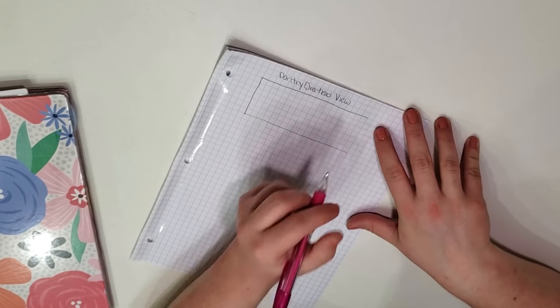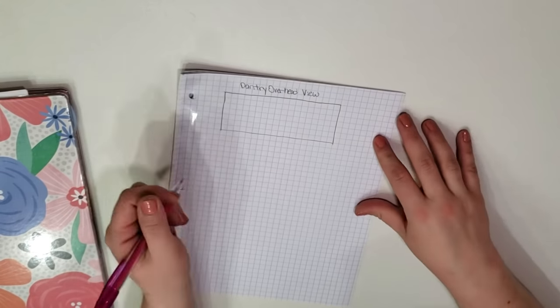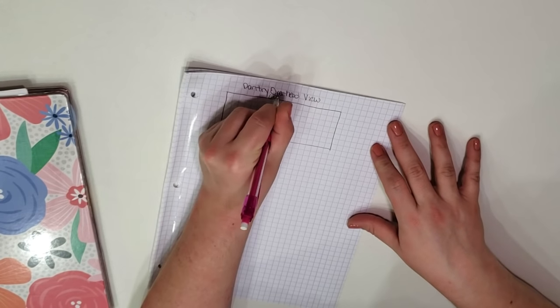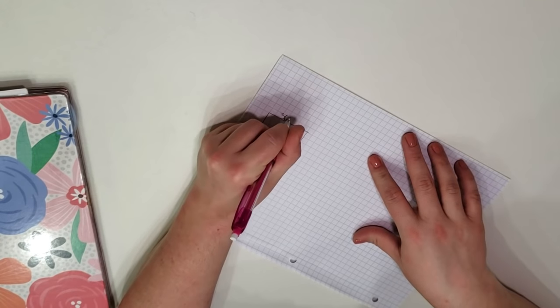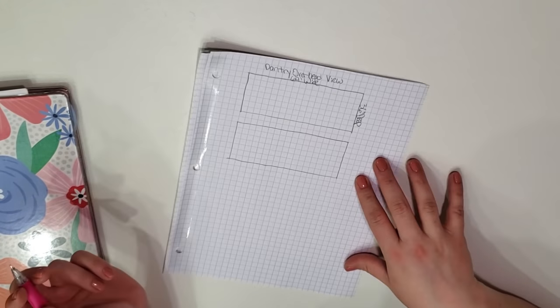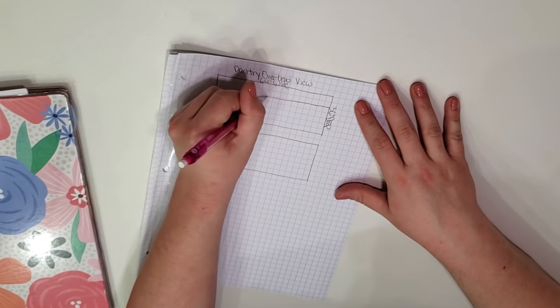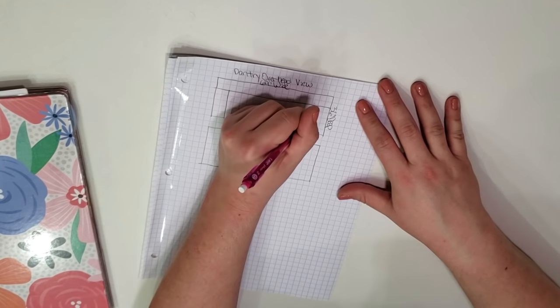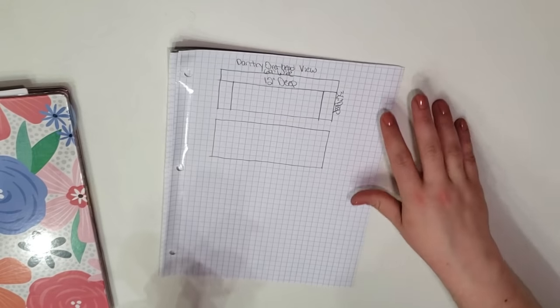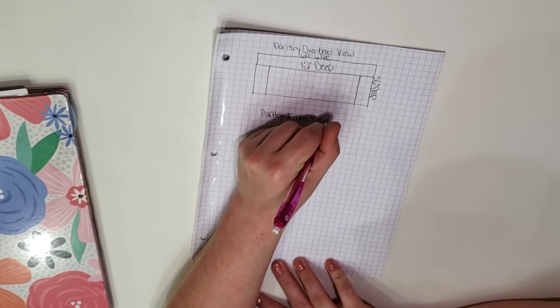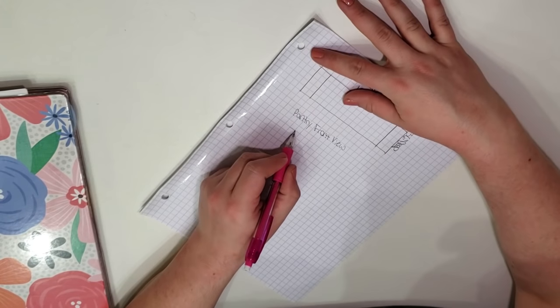Using graph paper I started with the overhead view of the pantry. I drew a rectangle and wrote out my dimensions. My pantry is 69 inches wide by 36 inches deep. I decided I'd be adding u-shaped shelves. I started out planning for 12 inch deep shelves. I will explain shortly why I ended up changing that.